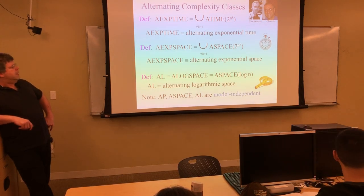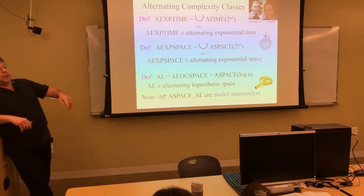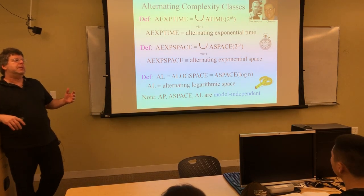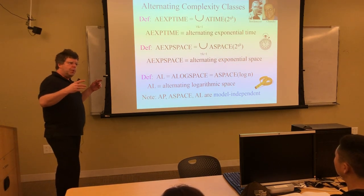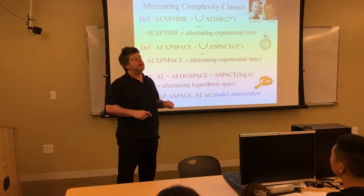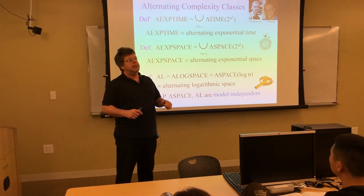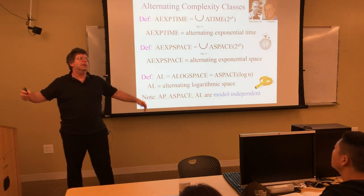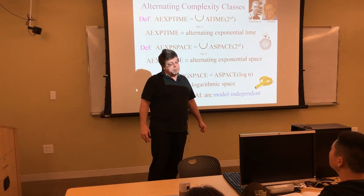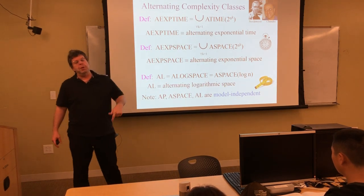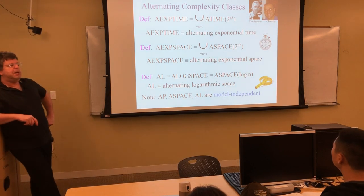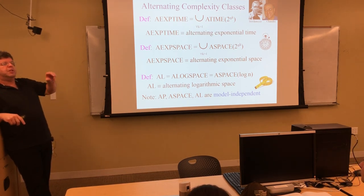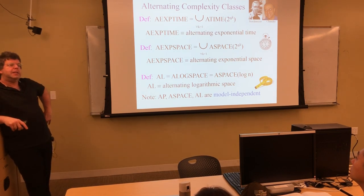Polynomial space — deterministic or non-deterministic — is a subset of alternating polynomial space, but whether they're equal is still open. We do know that alternating space F ⊆ deterministic time c^F — only an exponential blow-up in time to simulate alternating space-bounded computation. A beautiful result: alternating logarithmic space equals polynomial time. For non-deterministic log space, we don't know if it equals polynomial time — that's still open. Alternating polynomial time equals polynomial space — without the A, that would be an open question. And alternating polynomial space equals exponential time. The pattern continues: alternating exponential time equals exponential space.